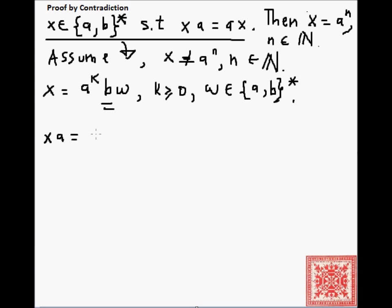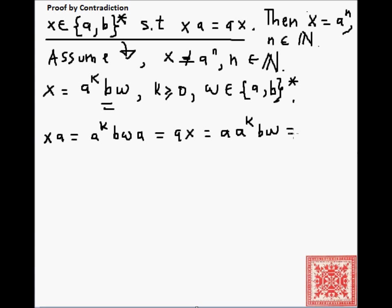So, x·a is equal to — we are going to rewrite x as a to the k, b, w — so x·a equals a^k · b · w · a. And this is equal to a·x, which, if we substitute x and replace it with a^k · b · w, is equal to a · a^k · b · w. We rearrange the a's and write it as a^k · a · b · w.